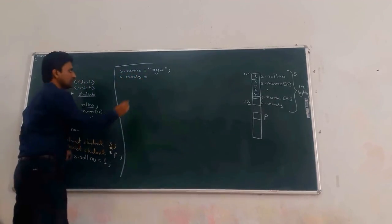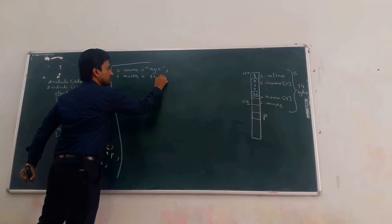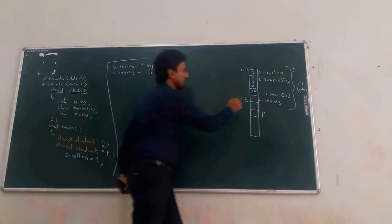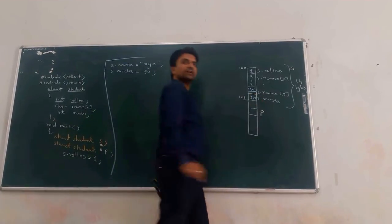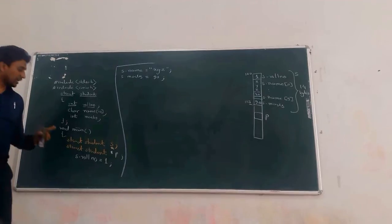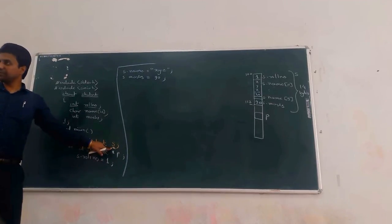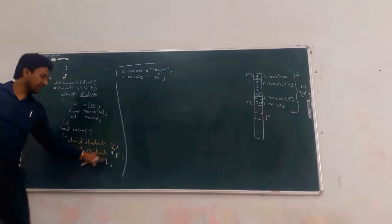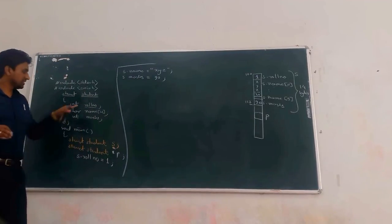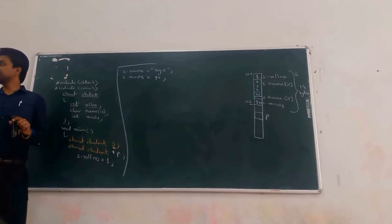For S.marks, assign the value 90. So 90 marks are assigned to S.marks. S is the structure's value variable, and we can assign values to its data members — roll number, name, and marks.